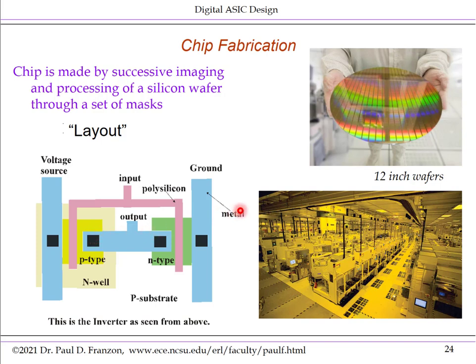The masks are used in a fab where wafers are processed. Typical wafer size today is 12 inches or 300 millimeters. Fabs are highly automated — robotic handlers move wafers between stations performing hundreds of steps to produce a wafer full of chips, which are then tested, diced, and packaged.